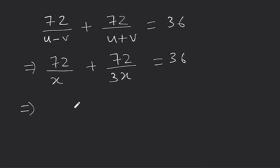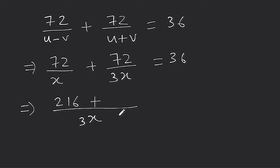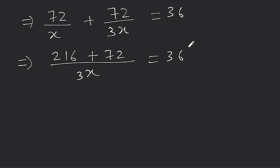आगे LCM ले लेंगे। 3x और x का LCM 3x आ गया। x से 3 times में, तो 72 × 3 = 216 आ जाता है। और 3x से 1 times में, तो 72 वैसे ही रहता है। ऊपर calculate करने पर 288 आ जाता है — यानी 288 upon 3x।